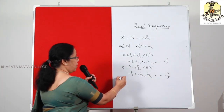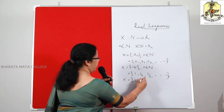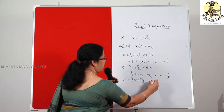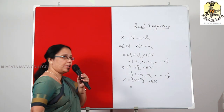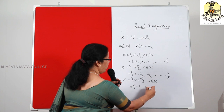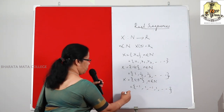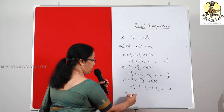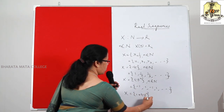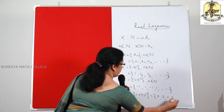Another example is X = {(-1)^N}, N belonging to N. So as N takes the values 1, 2, 3, etc., we get the terms as -1, 1, -1, 1, etc. Similarly, another example is X = {1 + (-1)^N}, so we get the terms as 0, 2, 0, 2, etc.